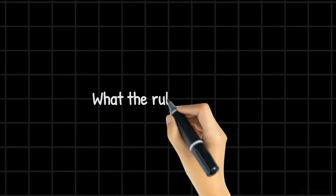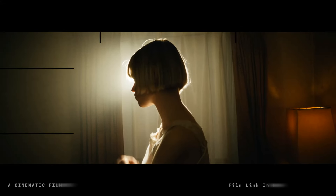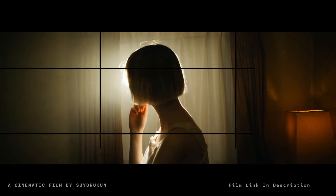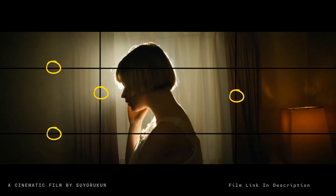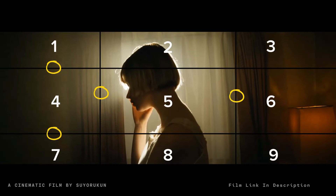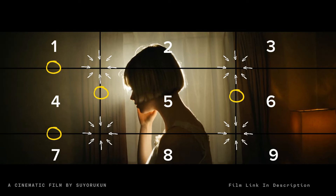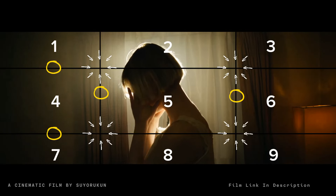So what is the rule of thirds? The rule of thirds is a process of dividing an image into thirds using two horizontal and two vertical lines, creating nine segment spaces with four intersection points.